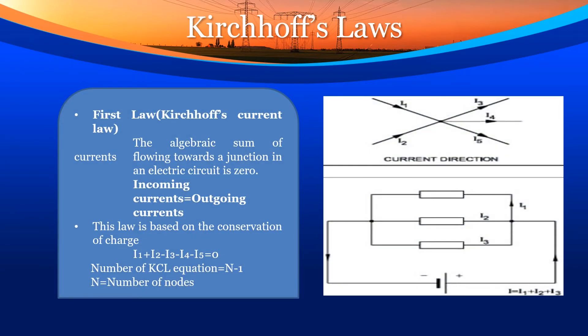Kirchhoff's law — First law: Kirchhoff's current law. The algebraic sum of currents flowing towards a junction in an electric circuit is zero; incoming currents equal outgoing currents. This law is based on the conservation of charge. The equation i1 + i2 − i3 − i4 − i5 = 0. The number of KCL equations is equal to n minus 1, where n is equal to the number of nodes.